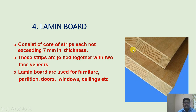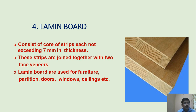Lamin board consists of a core of strips each not exceeding 7 mm in thickness. These strips are joined together with two face veneers. Lamin boards are used for furniture, partitions, doors, windows and ceilings.